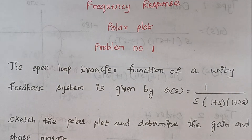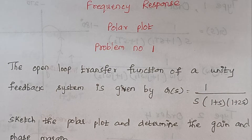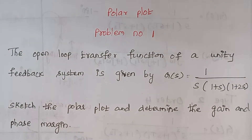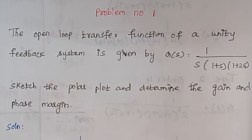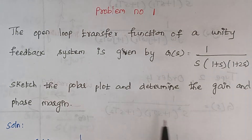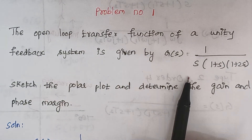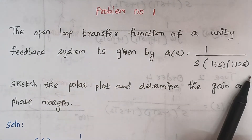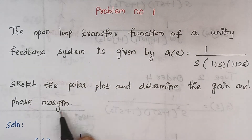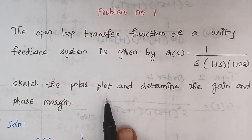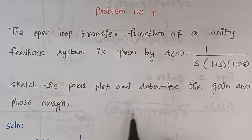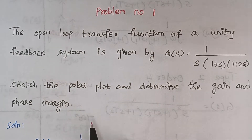Hello viewers, I am Kausalya. Today we are going to solve problem number 1 under the topic polar plot. The problem is: the open loop transfer function of a unity feedback system is given by this expression. Sketch the polar plot and determine the gain and phase margin.